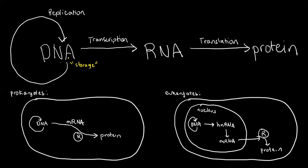That DNA will only be stored forever, never being expressed or never giving anything significant, if it's not expressed. So what does expression mean? Expression involves two steps: first, the conversion of DNA to RNA, which is called transcription; and then second, the conversion of RNA to protein, which we call translation. So expression technically means two out of three steps in the central dogma.